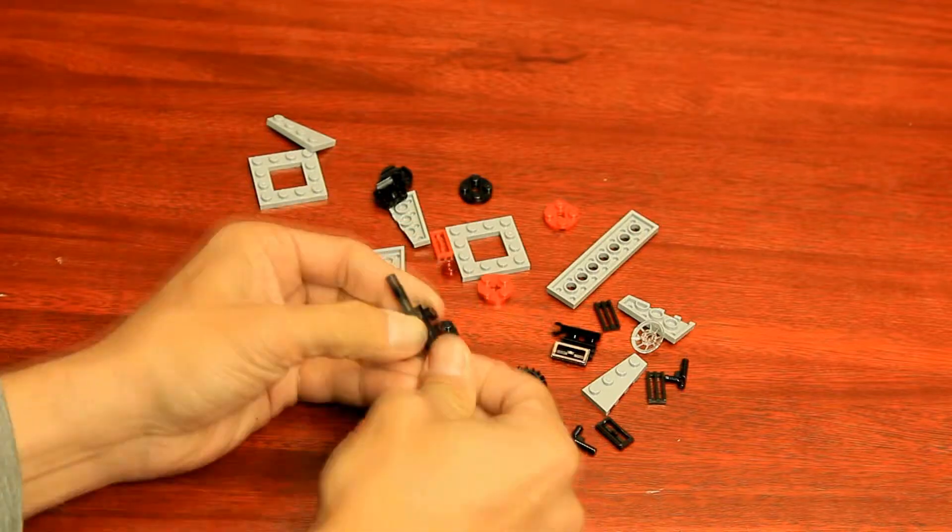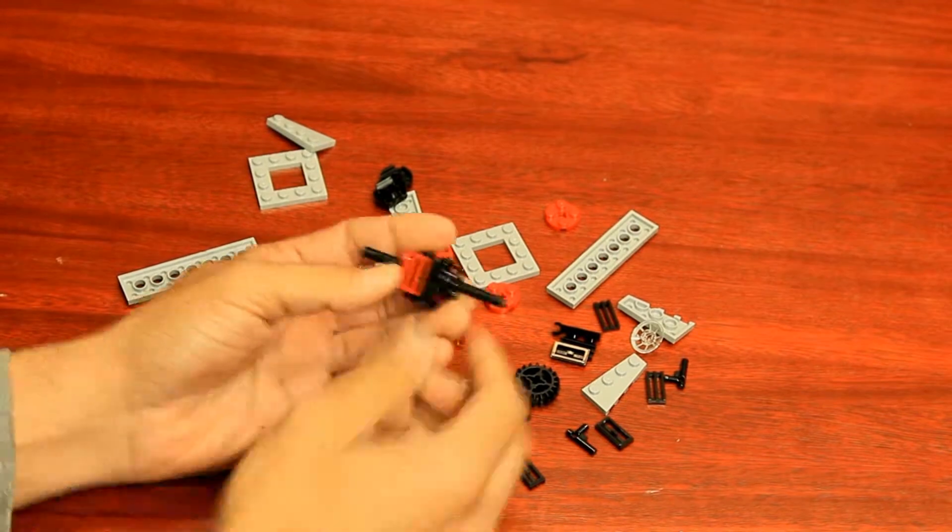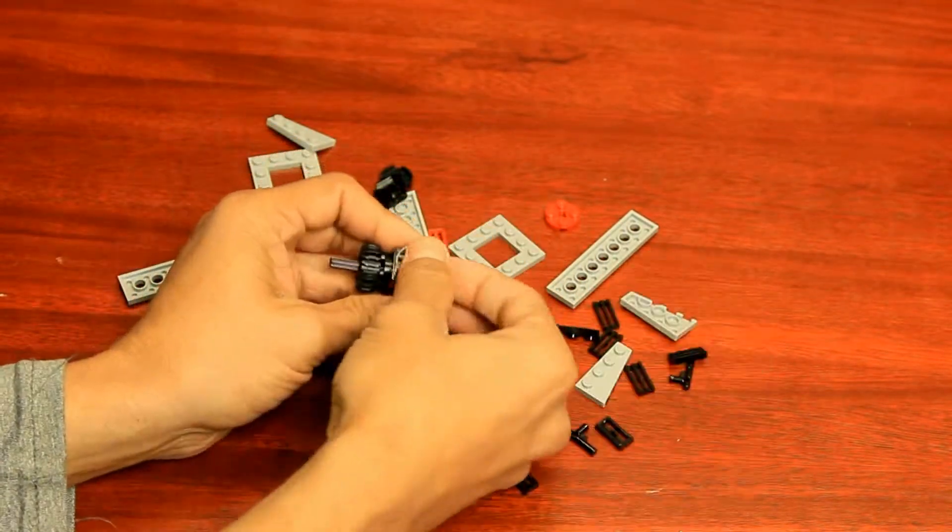Unlike the Imperial TIE Fighters, these have a little bit of red on them, as well as a combination of grey and black instead of the normal solid grey TIE Fighters or the solid black TIE Fighters.